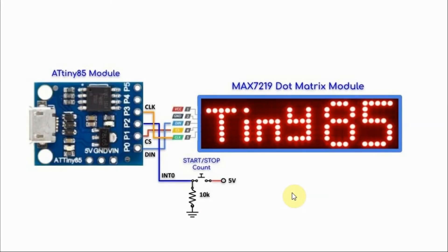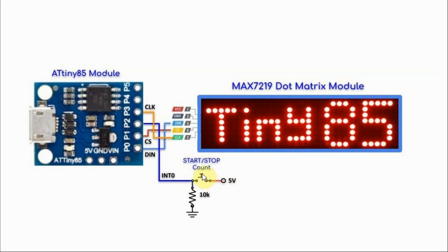The circuit operates as follows: before we press the push button, we will see the text Tiny85 on the module. When we press the push button, a count will start from 0 to 9 and will continue counting until we press the button again to stop the count, and we see the text Tiny85 again.